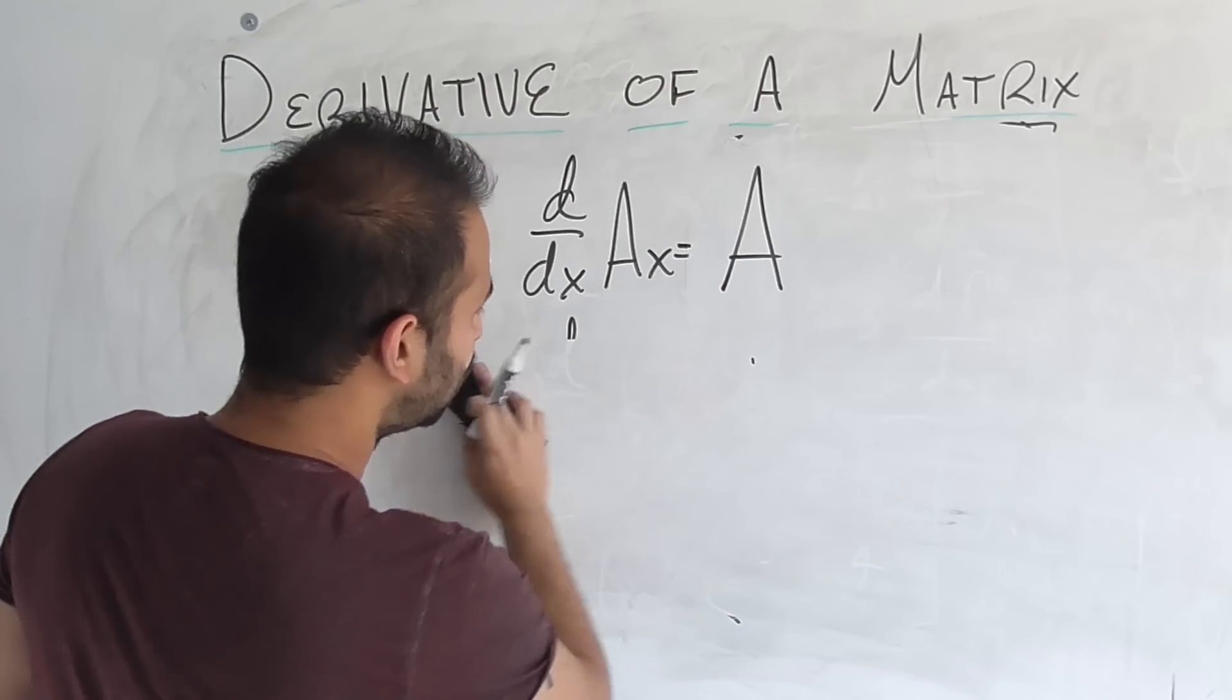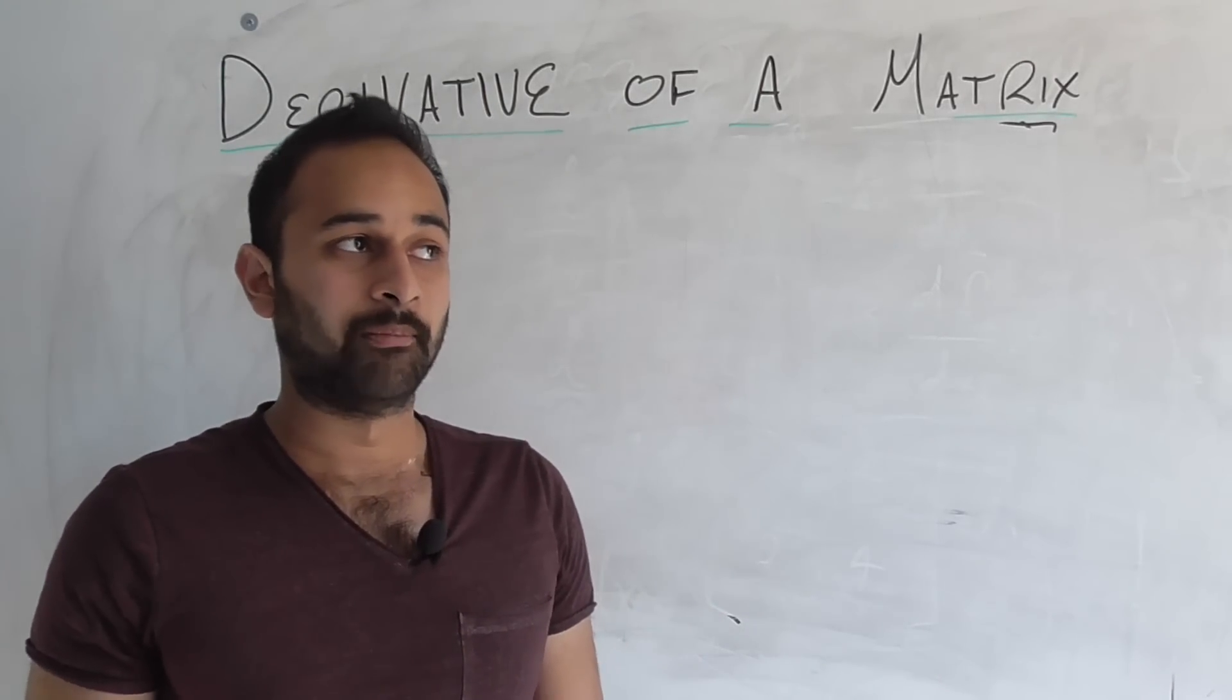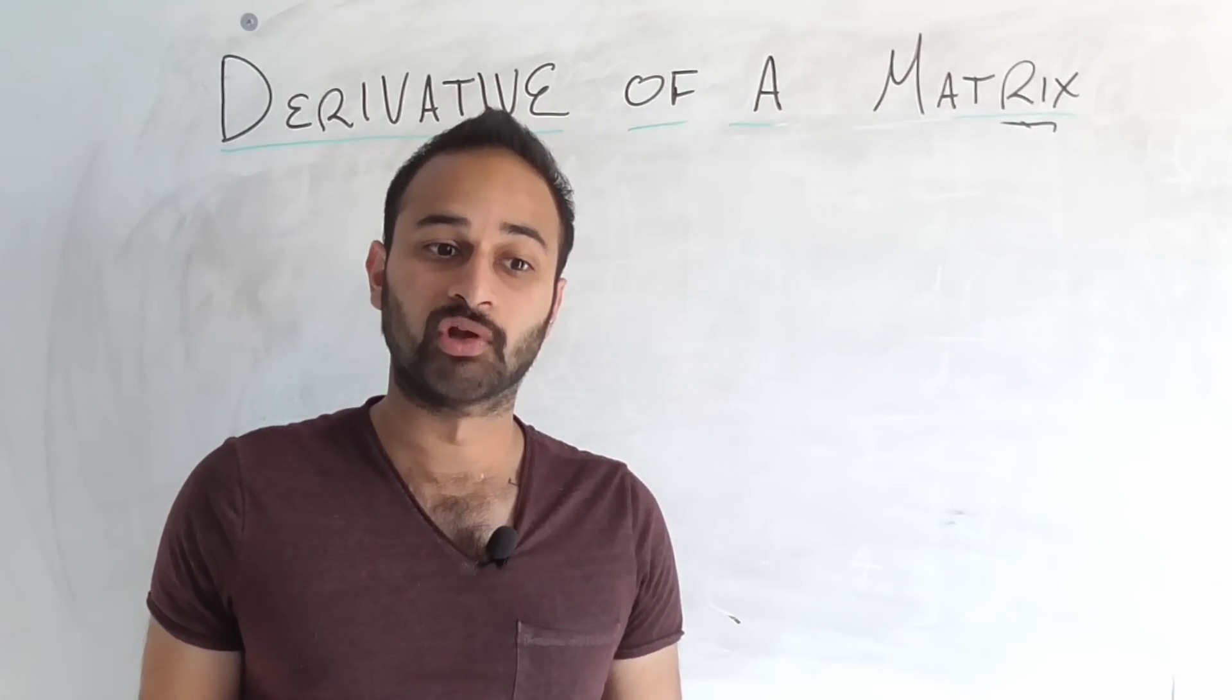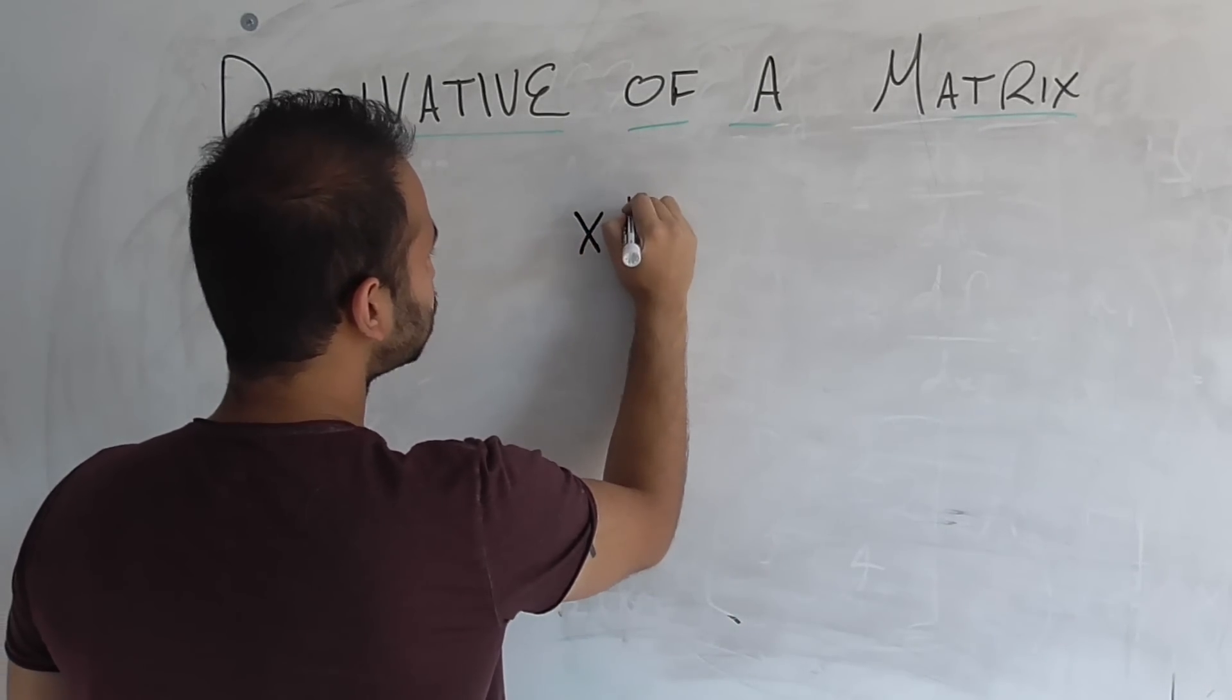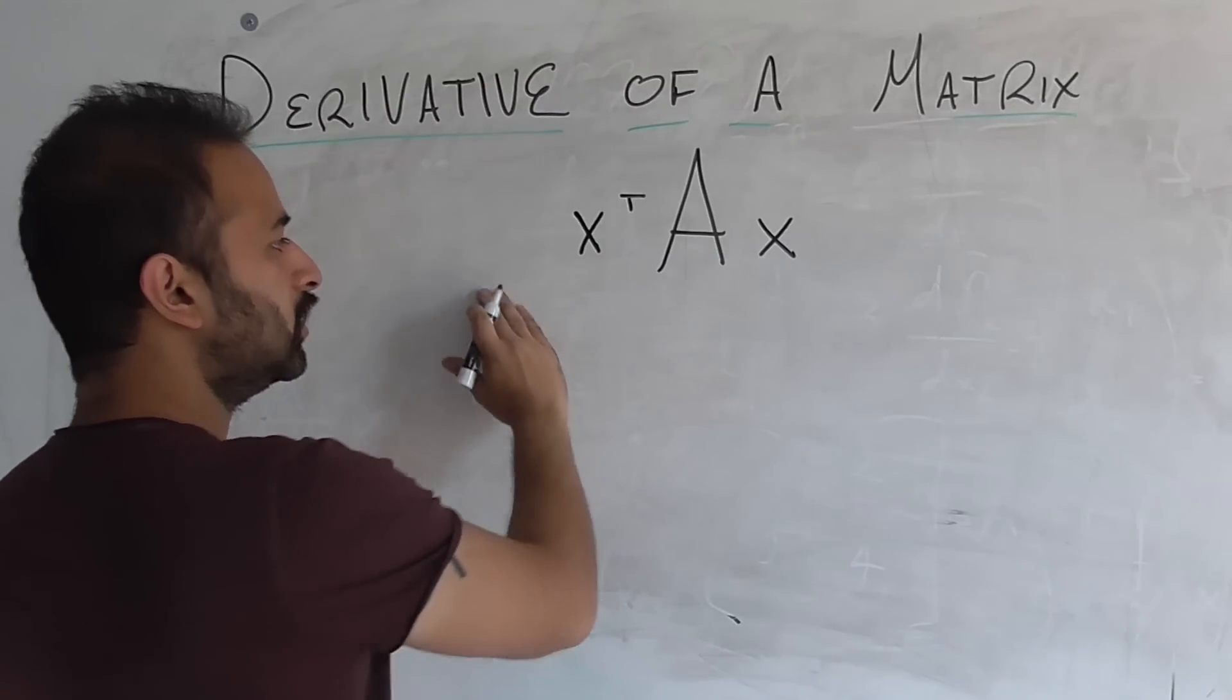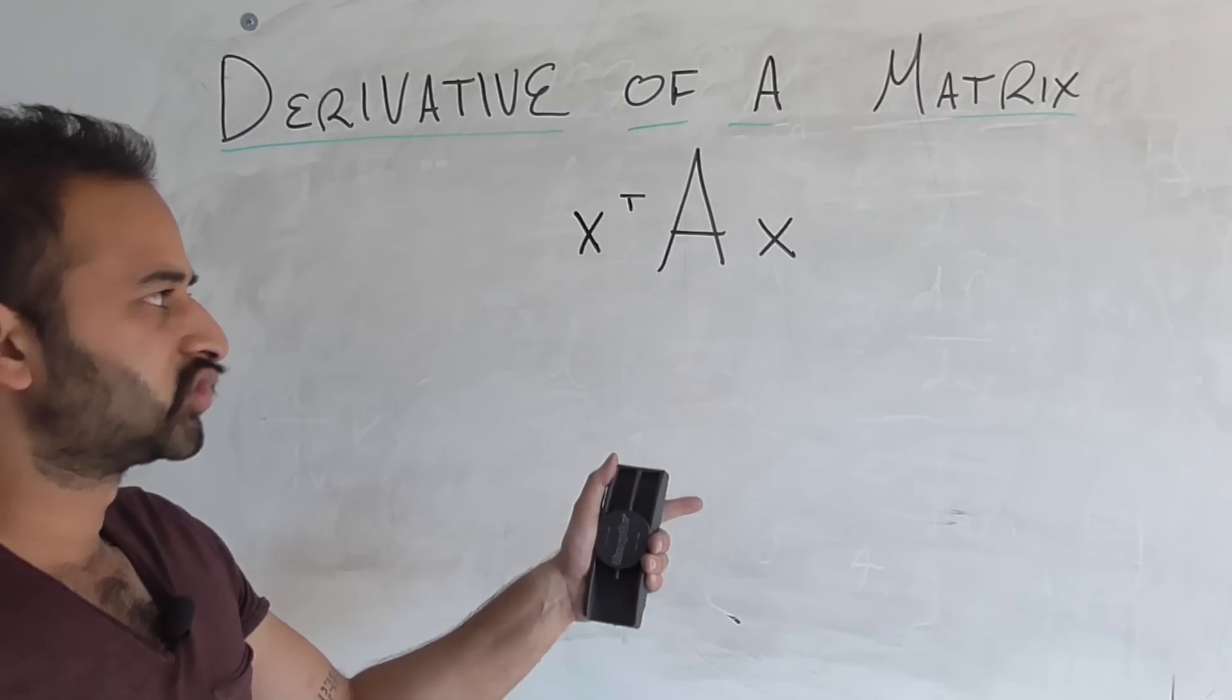Now before we close this video, let's look at one more matrix-related derivative, which is a little bit tougher. But we're going to look at it because it shows up a lot in our data science videos we'll be looking at in a bit. So here's a new linear transformation. We have x transpose A x. So here's our new function that we want to take the derivative of. Before we take the derivative, let's try to understand this function.